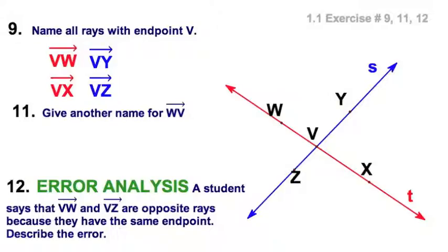Next question, number 11, how about another name for WV? Now remember, WV starts here passing this way, from W to V. Well, since a ray is infinite, as the arrow indicates, that's the same as WX, because it contains all the points from W moving in this direction along that red line. So WX is another legitimate name for the ray WV.